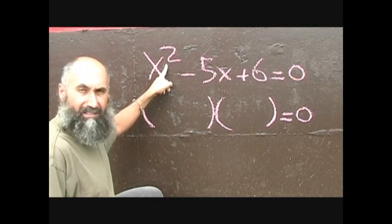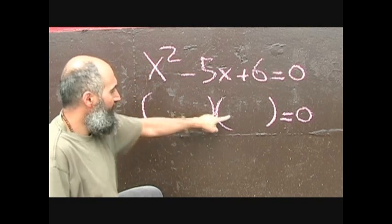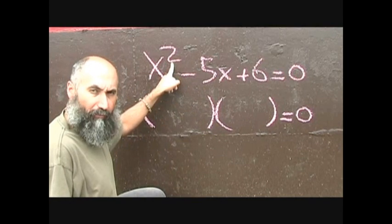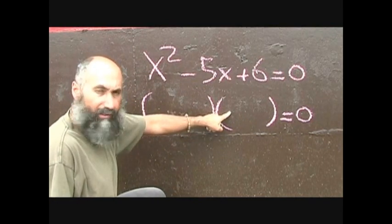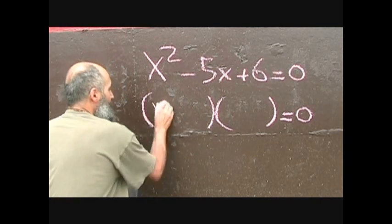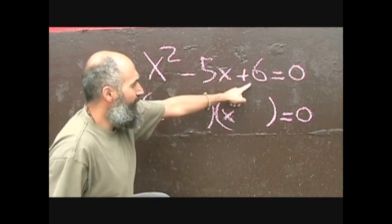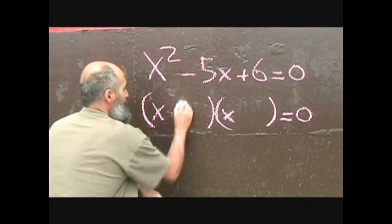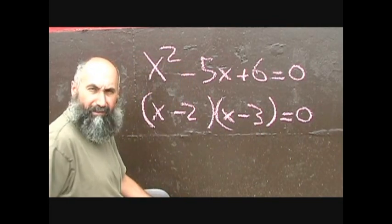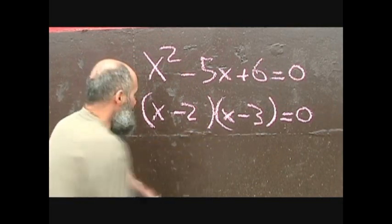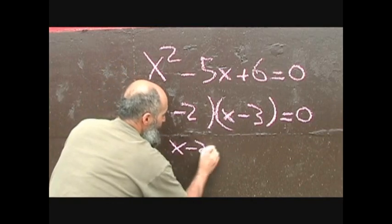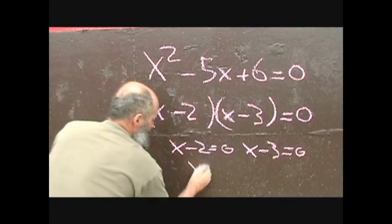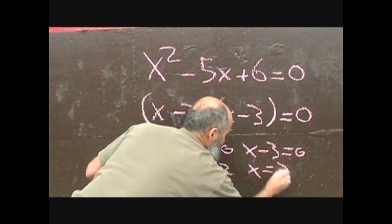For this, all you do is break the x squared into even parts. Since it's x squared, you're going x and x. And what we figured out is negative 2 times negative 3. Then you set each one of these equal to 0. So x minus 2 equals 0 gives x equals 2, and x minus 3 equals 0 gives x equals 3.